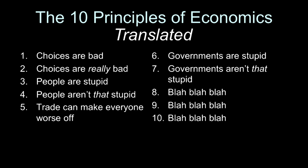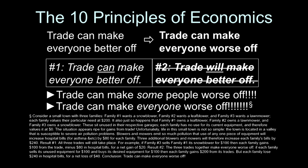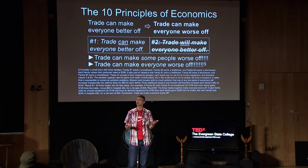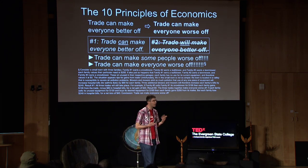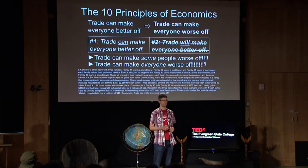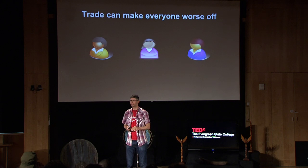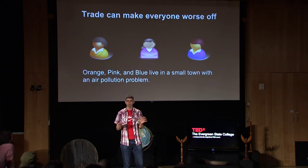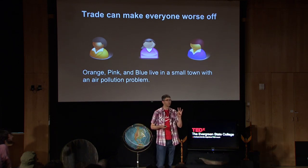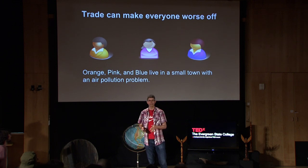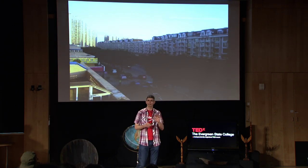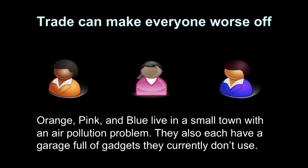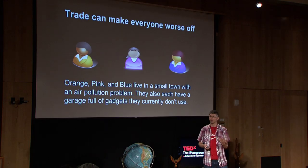So there are the ten principles of economics translated. I want to go back to the footnote example because it is actually a real example. It is possible in a very made-up economics model sort of way to have a situation where trade makes everyone worse off. Since that relates to the work I do on environmental economics and climate change, I want to talk you through that example. A made-up story about three people: orange, pink, and blue, who all live in a small town with an air pollution problem — think Beijing, but with three people. I lived in Beijing for five months recently. They each have a garage that's full of stuff that they don't use.